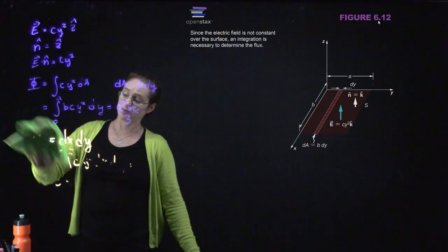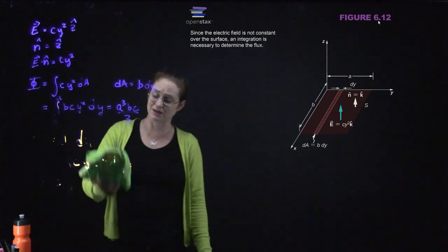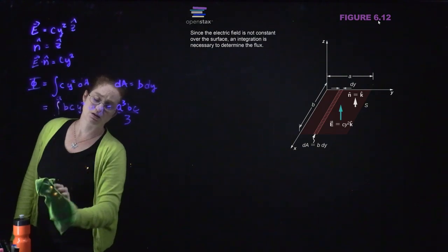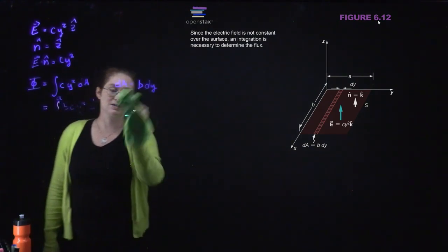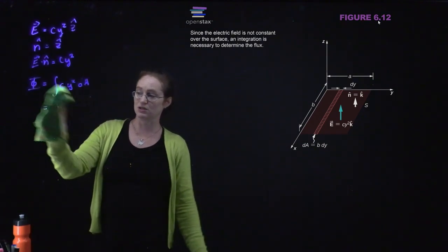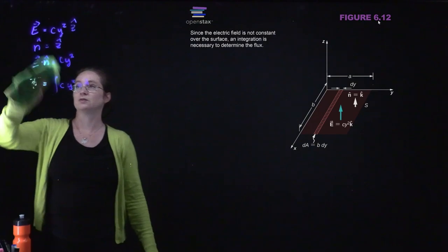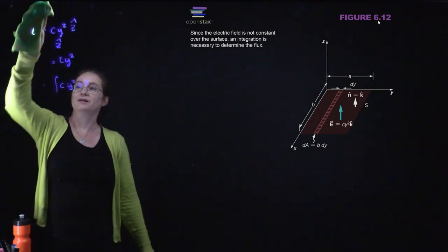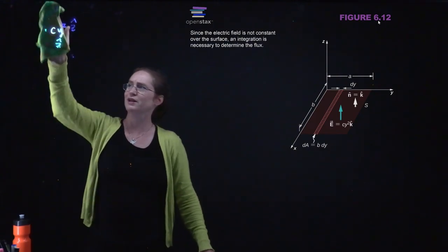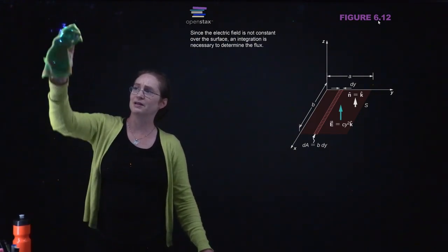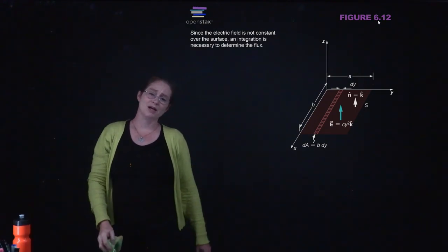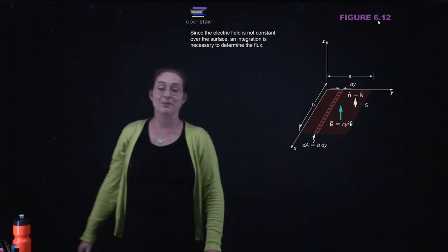Algebra mistakes are probably the number one type of mistake students make in introductory physics. A good cross-check is to work with a study group — have each person do the problem independently, and if you agree, the odds are much lower that your answer is wrong.